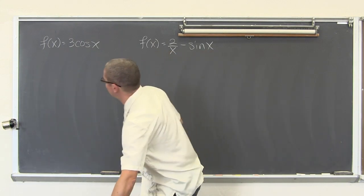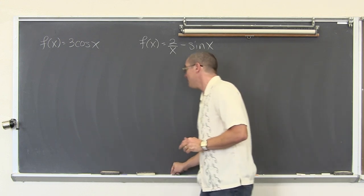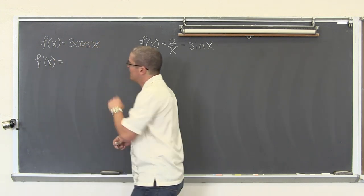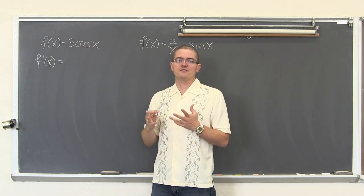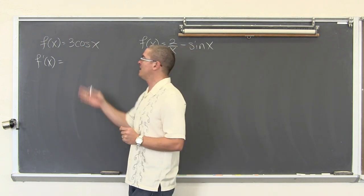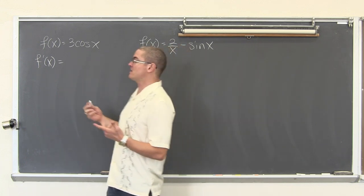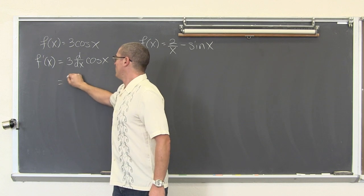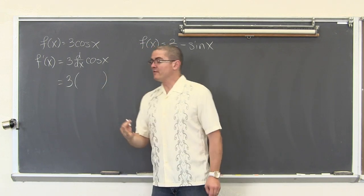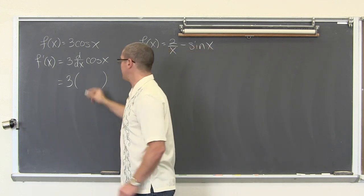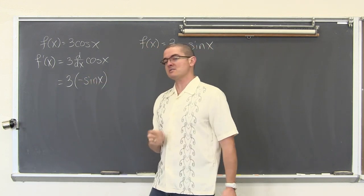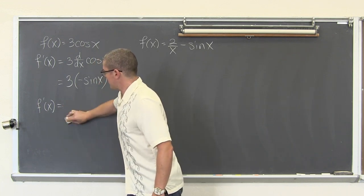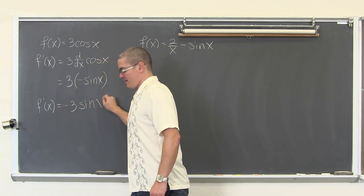For our first example, f(x) equals three cosine of x. So f prime of x is going to equal — this has a constant times our cosine of x — so we use the constant rule: the derivative of three cosine of x equals three times the derivative with respect to x of cosine of x. The derivative of cosine of x is negative sine of x, so f prime of x equals negative three sine of x.